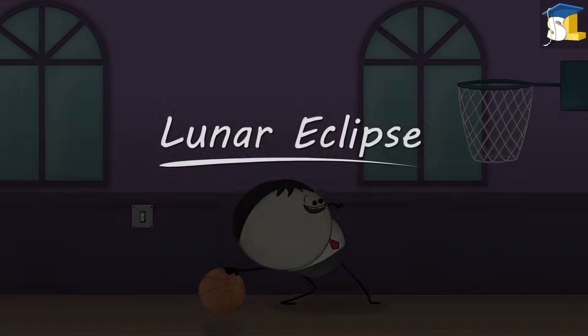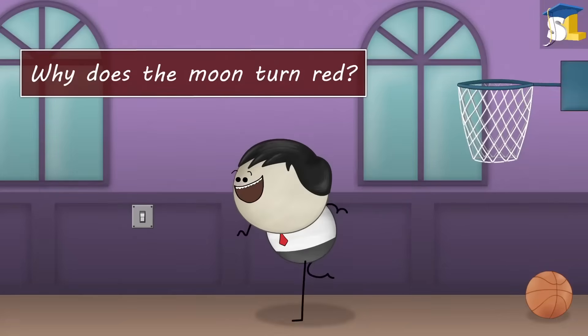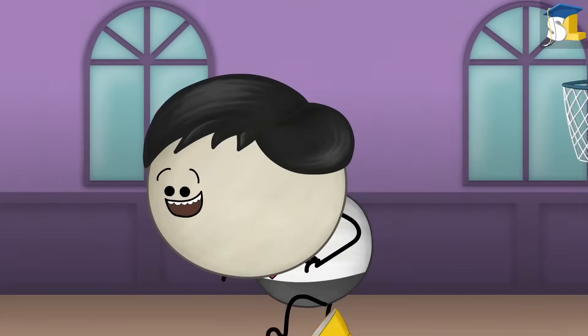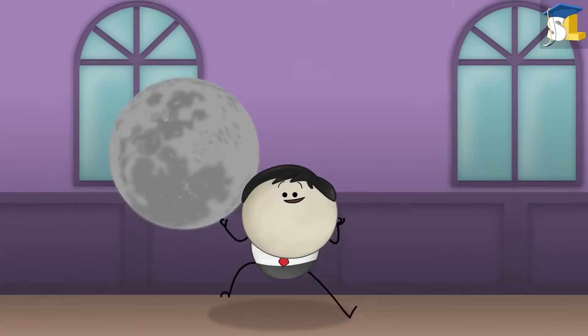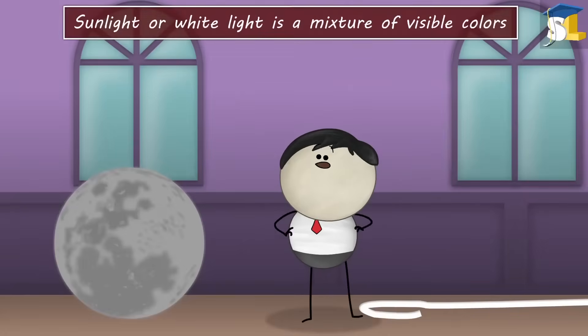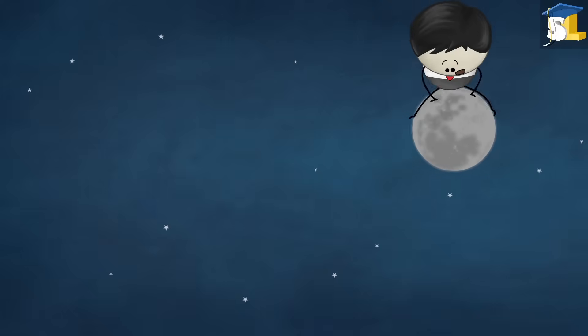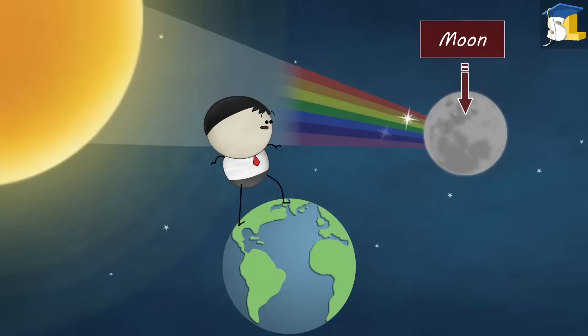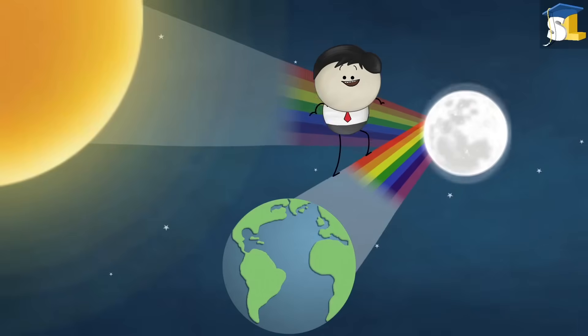Lunar Eclipse. Why does the moon turn red? To scare us. No. Moon does not have light of its own. Why? Didn't he pay the electricity bill? Please listen. Sunlight or white light is a mixture of visible colors. Now, when the sunlight falls on the moon, it reflects all these visible colors equally, making the moon to mostly appear white. However, during a lunar eclipse when the earth is exactly between the sun and the moon, the moon appears red.